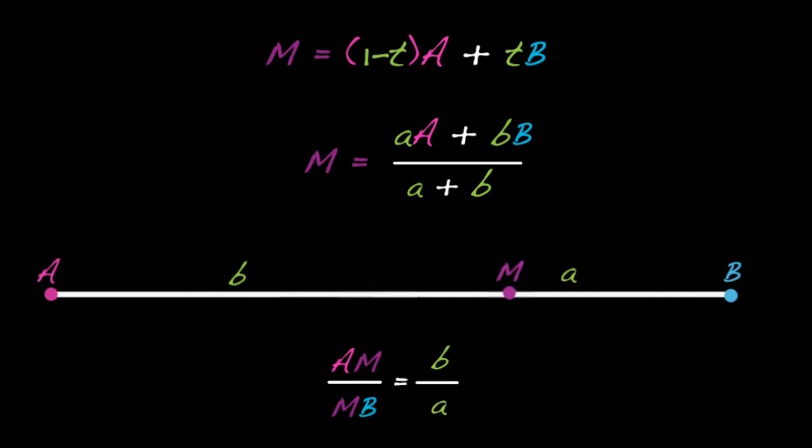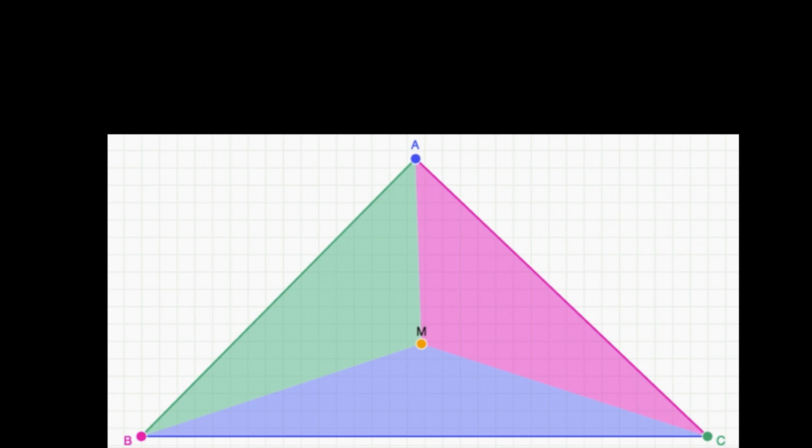Now, let's generalize to the case of averages of three points. m equals little a times a plus little b times b plus little c times c, all of that divided by little a plus little b plus little c.